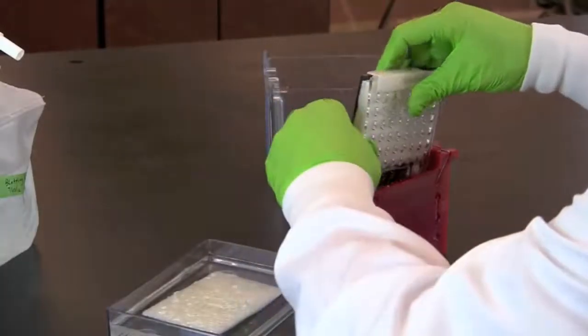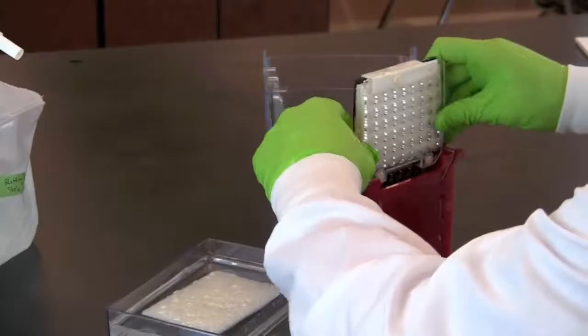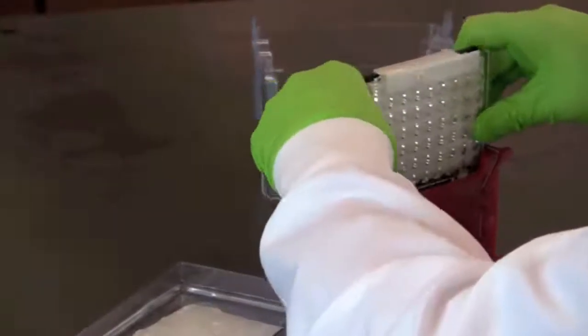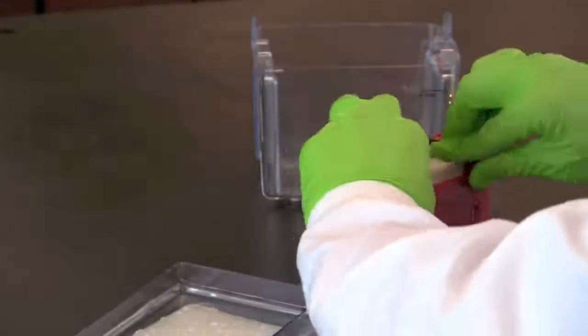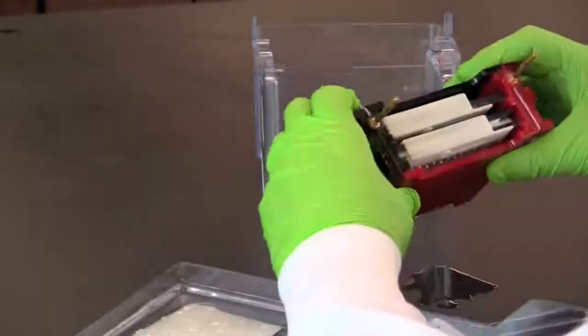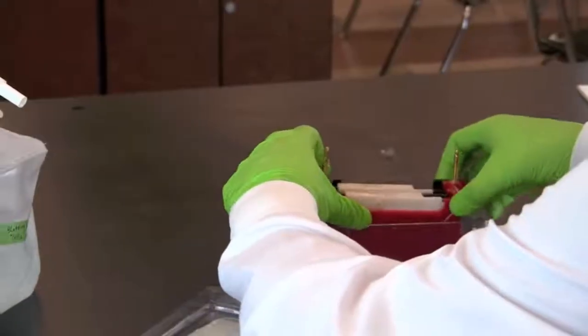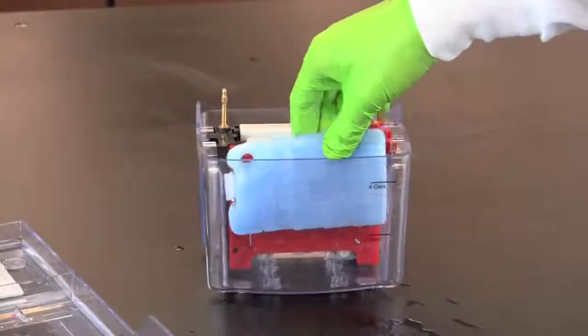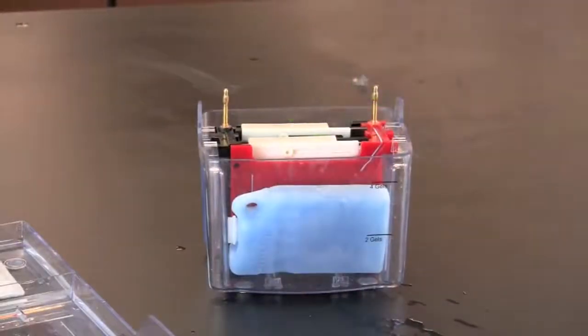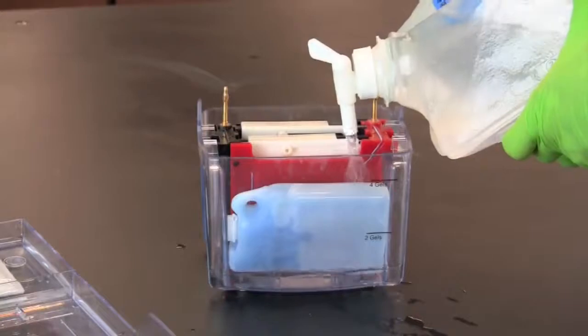Insert the gel holder into the inner module. Make certain that the black side of the gel holder is next to the black side of the module. Place the inner module into the electrophoresis chamber. Add a frozen cooling unit and fill the chamber with blotting buffer to the level of the white clip on the gel holder.